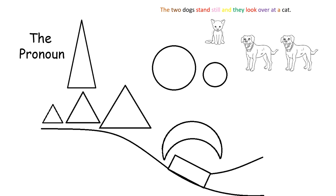You can see here in the sentence, the two dogs stand still and they look over at a cat, that I have colored the word they green for the pronoun. The word they replaced the second set of words for the two dogs. When we use pronouns, we avoid repeating ourselves over and over again and make our writing sound more interesting.